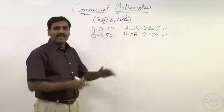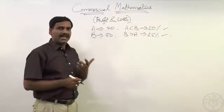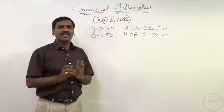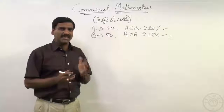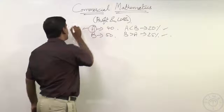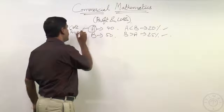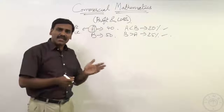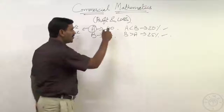Now we can relate these things with profit and loss. Suppose a man purchased an article for 40 rupees. The price at which an article is purchased is known as cost price. So instead of having this as A, if I purchase an article at 40 rupees, the cost price of the article is 40 rupees.